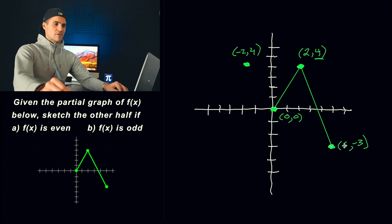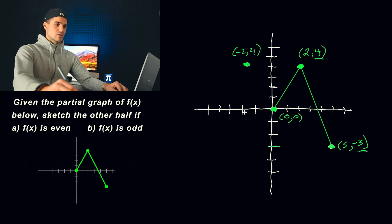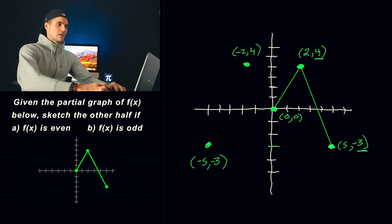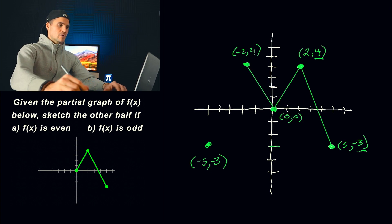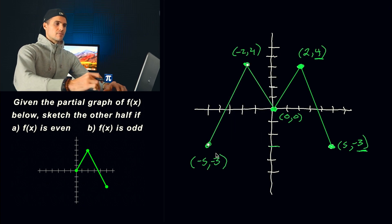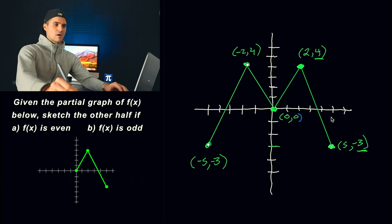And then this point (5, negative 3) — the y value stays the same at negative 3, and the x value of positive 5 changes sign and turns into negative 5. So we get the point (negative 5, negative 3) right there. Then we connect all of these points — from here to there, and then from here to there. That gives us an even function. We took this half of the graph and reflected it to get the other half. The function is symmetrical about the y-axis and is even.